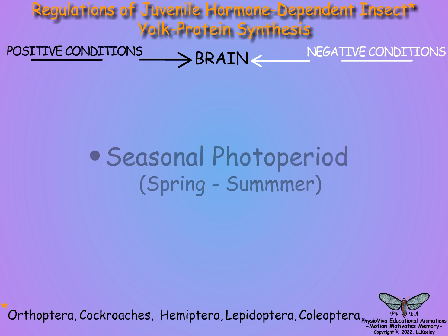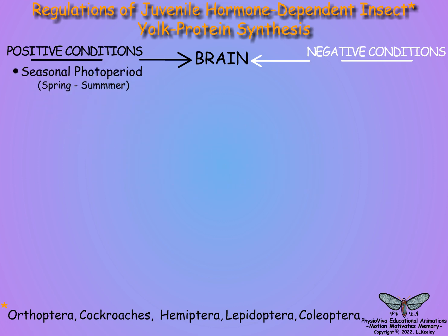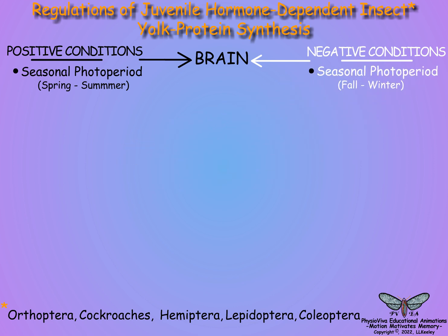Lengthening days and warming temperatures of spring and summer promote reproductive activity. In contrast, shortening days and cooling temperatures of autumn and winter suppress endocrine activity and reproduction and initiate dormancy.